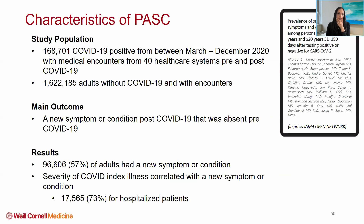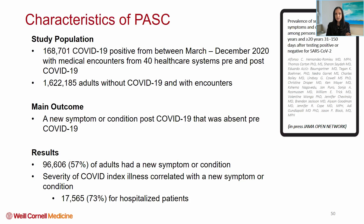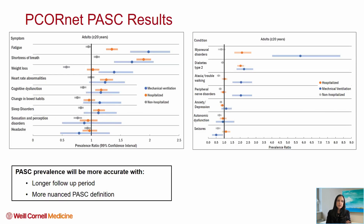In our first study using the screening computable phenotype, we studied 168,000 patients who had COVID-19 positivity. Our main outcome was a new symptom or condition post-COVID that was absent pre-COVID. Surprisingly, 57% of adults had a new symptom or condition. That percentage went up to 73% when we looked at hospitalized patients. Here's a depiction of the symptoms and conditions where PASC was expressed, and this is being published in the JAMA Network Open journal later this month.